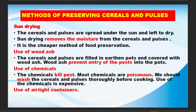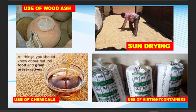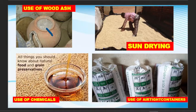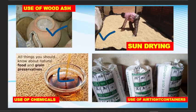Use an airtight container. Let's now look at what we have mentioned. Use of containers — you can use the pot, put wood ash inside, then you can sun dry, you can use the chemical, and use of airtight container.